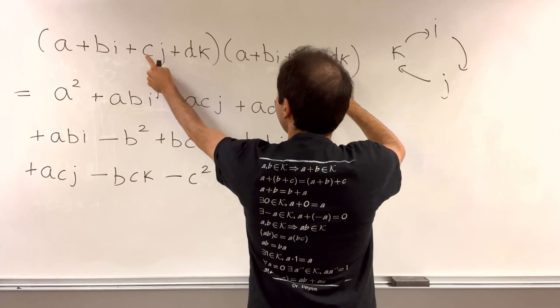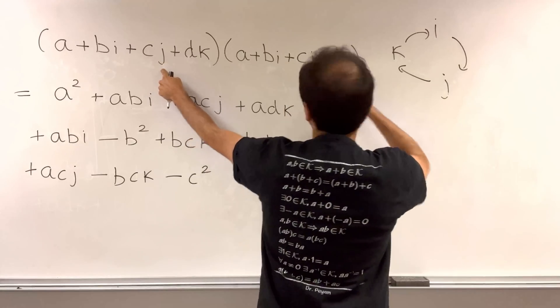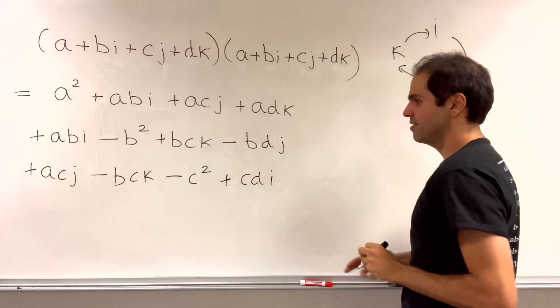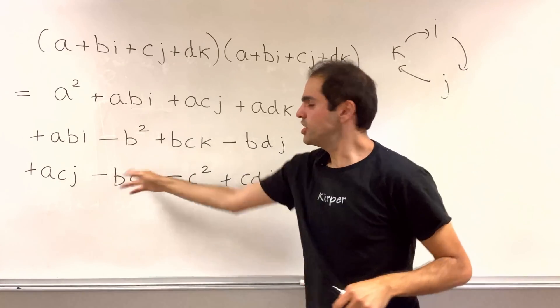And finally, cj times dk, so cdjk, which becomes i, so plus cdi. Again, one ijk.